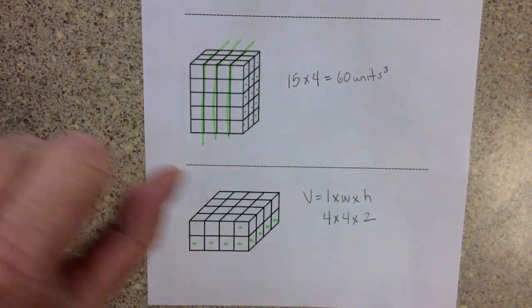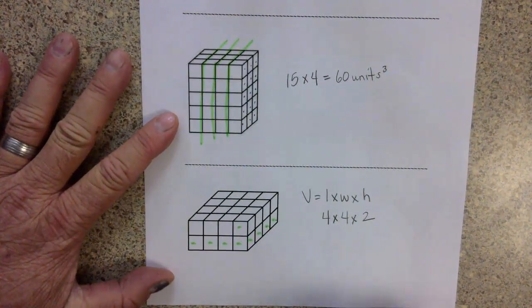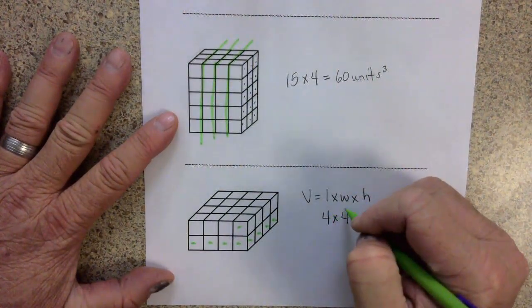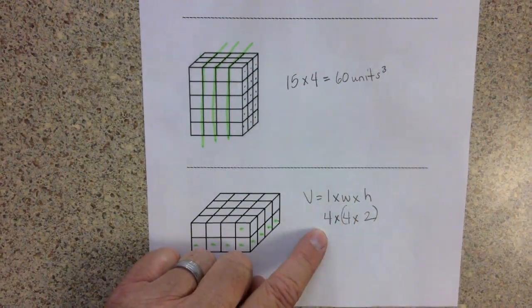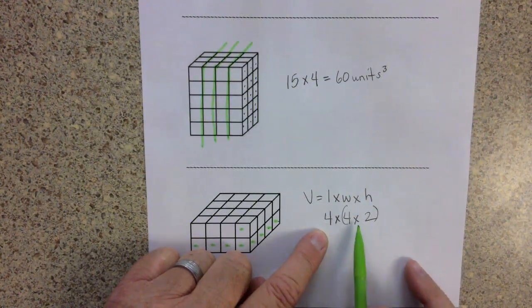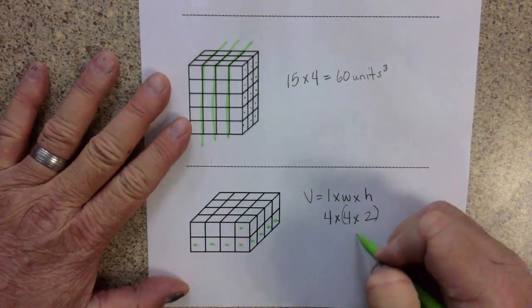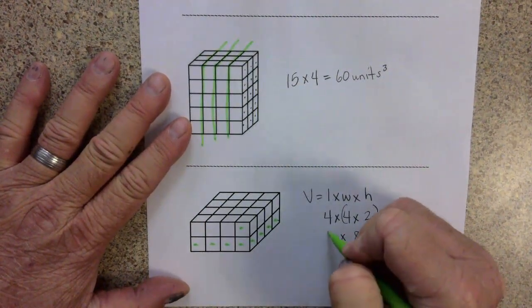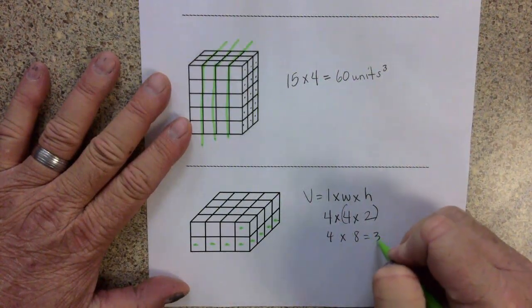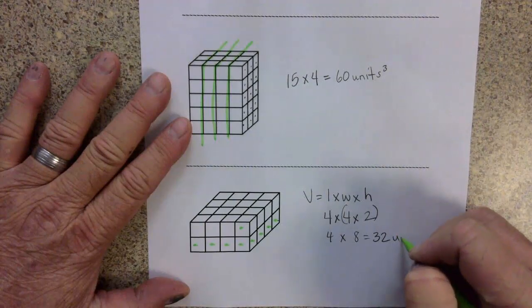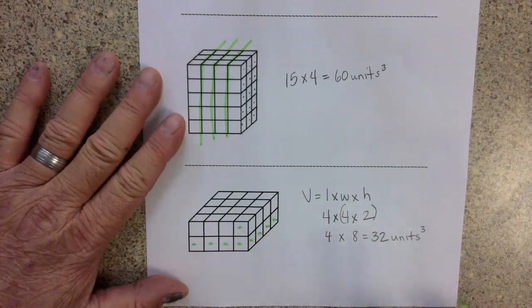And they don't really know a way to multiply 3 numbers, so what I've taught them to do is put parentheses around 2 of them. They could do parentheses around 4 times 4, then they would be doing 16 times 2. In this case, I know that 4 times 2 is 8. And then I'm bringing down the 4. And 4 times 8 is 32 cubic units.